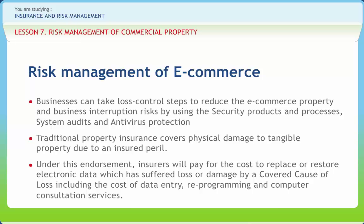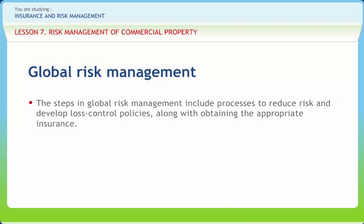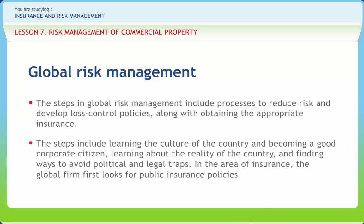Labor laws reflect another interesting cultural difference. The steps in global risk management include processes to reduce risk and develop loss control policies, along with obtaining the appropriate insurance. The steps include learning the culture of the country and becoming a good corporate citizen, learning about the reality of the country and finding ways to avoid political and legal traps. In the area of insurance, the global firm first looks for public insurance policies. The U.S. government established an insurance program administered through the Overseas Private Investment Corporation in 1948. The types of coverage available include expropriation, confiscation, war risk, civil strife, unfair calling of guarantees, contract repudiation, and currency inconvertibility.